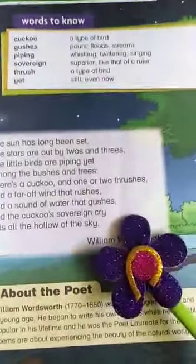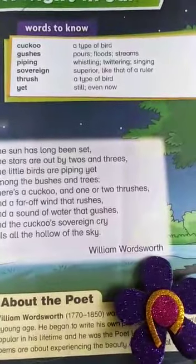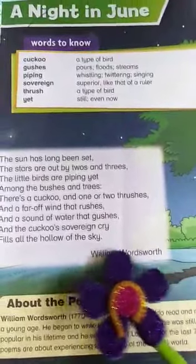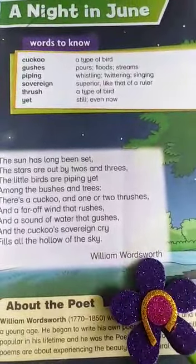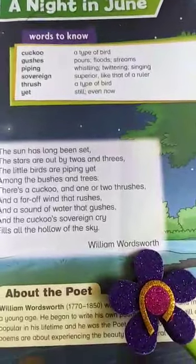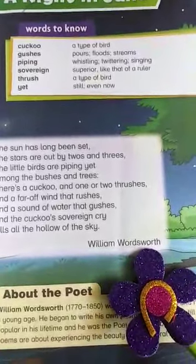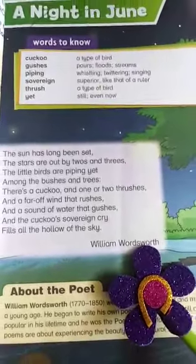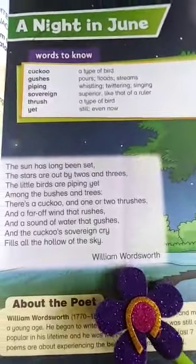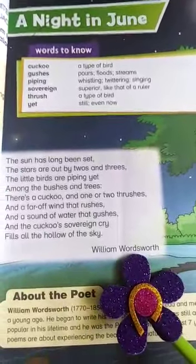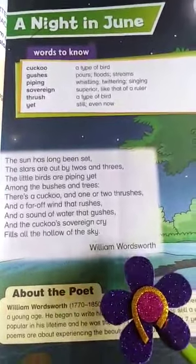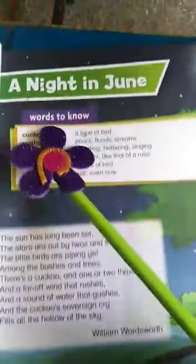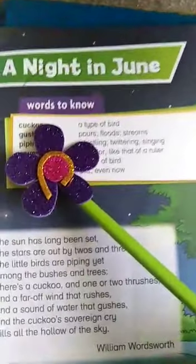Before we start, first of all I'm going to tell you the name of the poet. The name of the poet is William Wordsworth. William Wordsworth is very famous for his poetry about nature. He is a poet of nature — he mostly describes natural scenes. Now we start with the words to know.